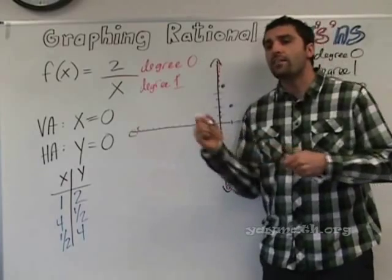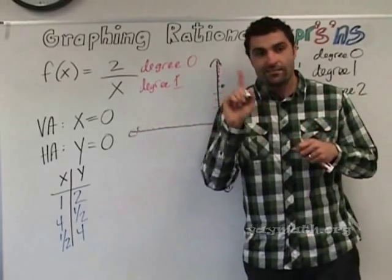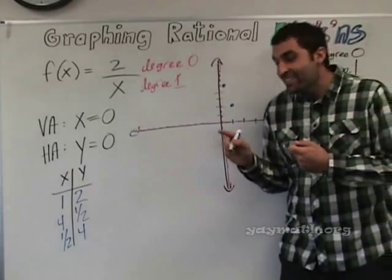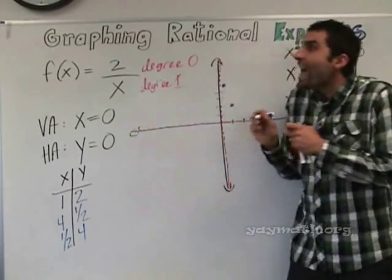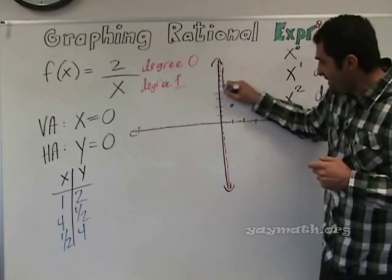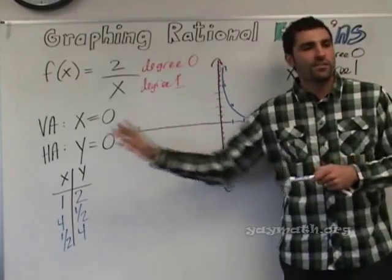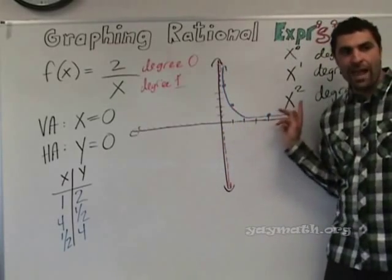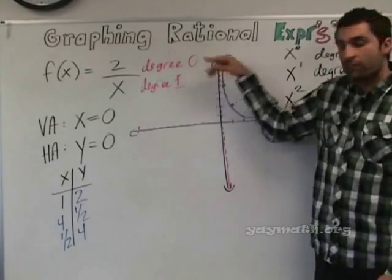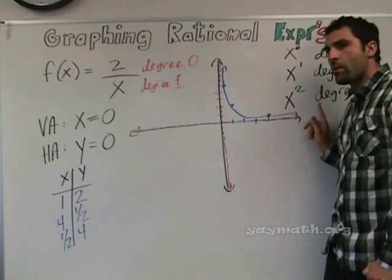The idea of asymptotes is you can get close, you can hug them, but no kissy. As x gets smaller, y gets very large. And as x gets very large, y gets smaller. So this is half the graph. Notice — as x gets smaller, y gets very large, and as x gets very large, y gets smaller. Now let's do some negatives.